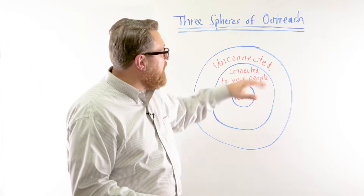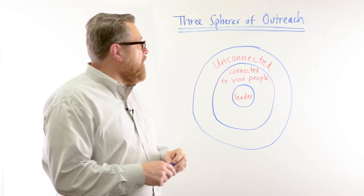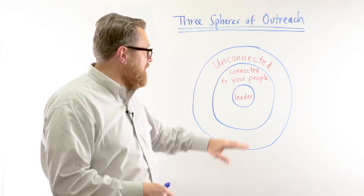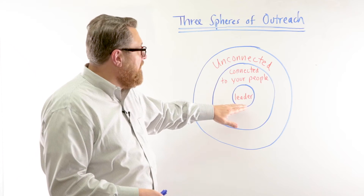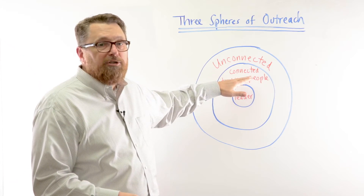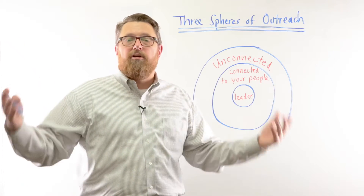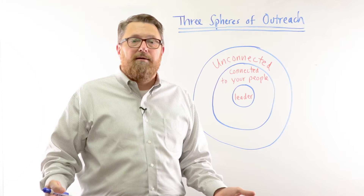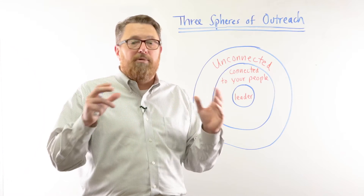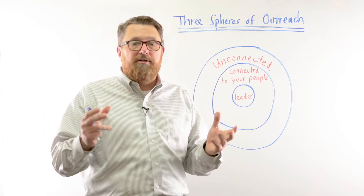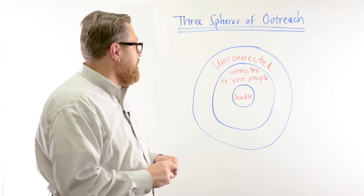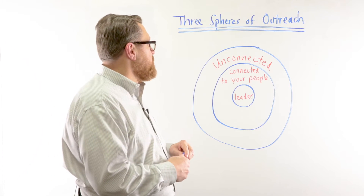The third sphere is what we call the people who are unconnected. They're not connected with the leader, and they're not connected with your people in the church, but they live in your community — people who are just plain unconnected with you or the influence of your church.